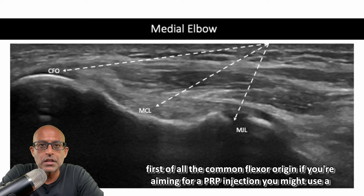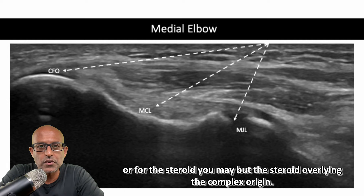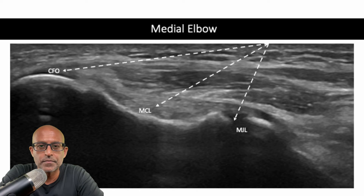First of all, the common flexor origin. If you're aiming for a PRP injection, you might use a fenestration technique. Or for the steroid, you may put the steroid overlying the common flexor origin.